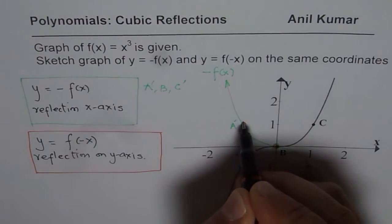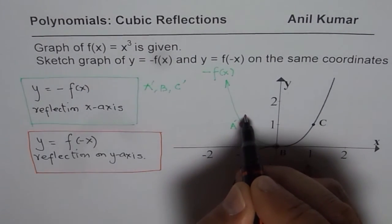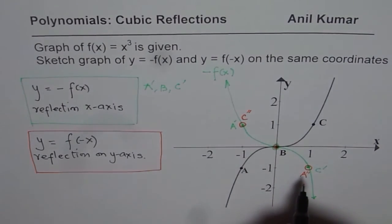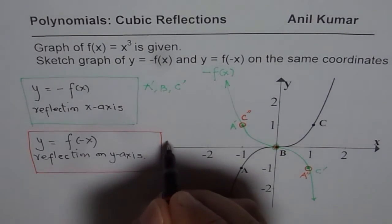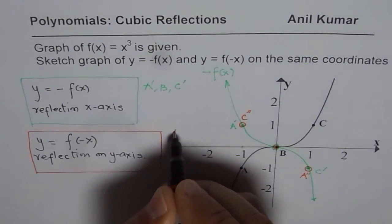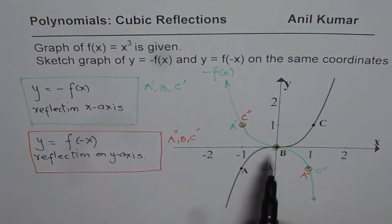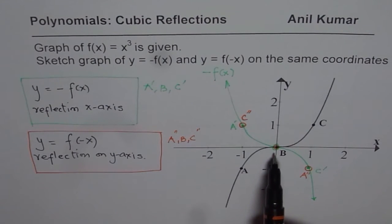C gets reflected, and we get it right there. So that is C double dash. So now the points to be connected are A double dash, B, and C double dash. 0 times minus 0 is the same thing.